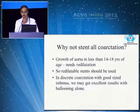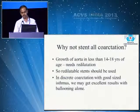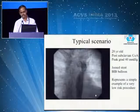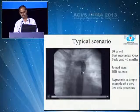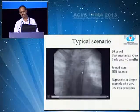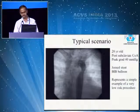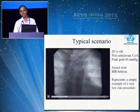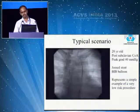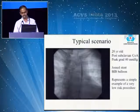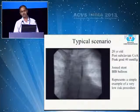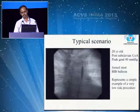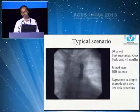In discrete coarctation with a good-sized isthmus, sometimes we may get excellent results with ballooning alone. However, wherever there is isthmic hypoplasia, we have to resort to stenting. This is a typical scenario: a discrete coarctation in a 20-year-old. After taking measurements of the pre-coarctation isthmus, a sheath is placed. This is a BIB (balloon-in-balloon) — for example, a 16-mm balloon has an inner balloon of 8 mm. You first dilate only the inner balloon, check the position, and then proceed to outer balloon dilatation. This represents one of the very simple coarctation stenting procedures.